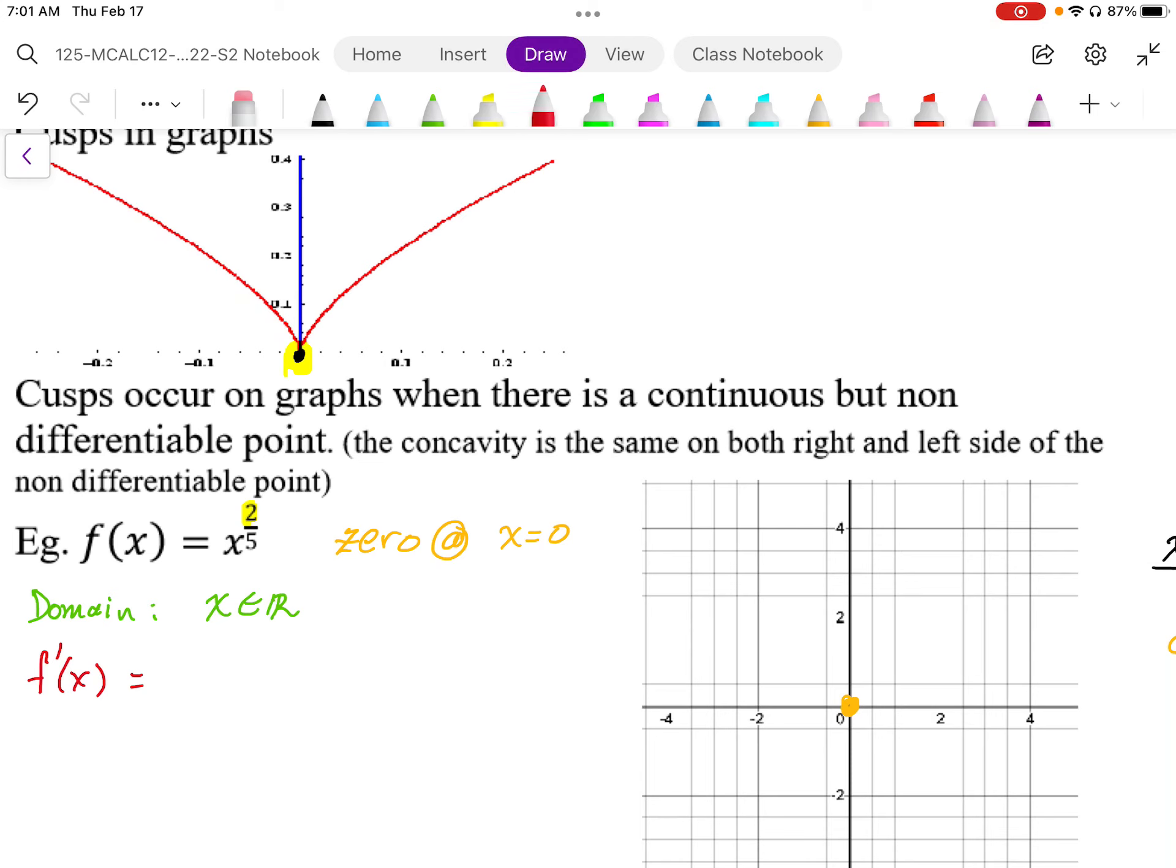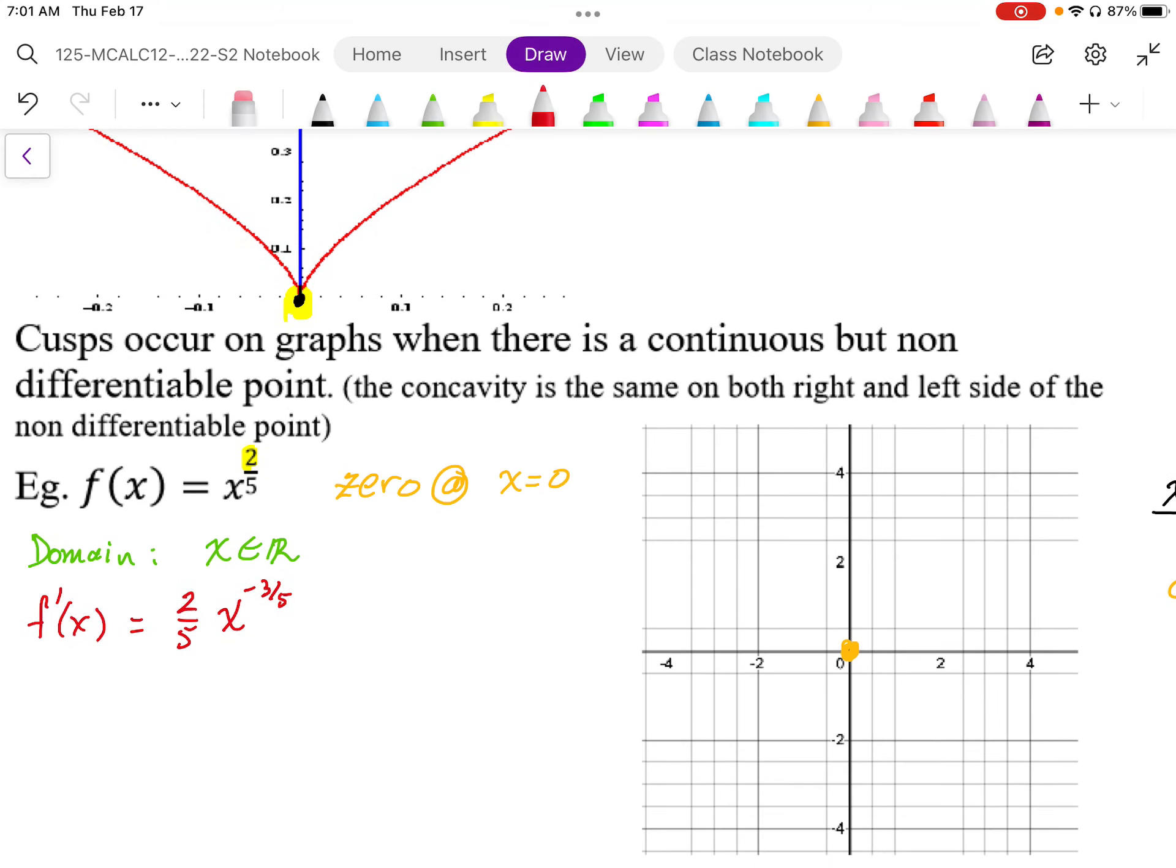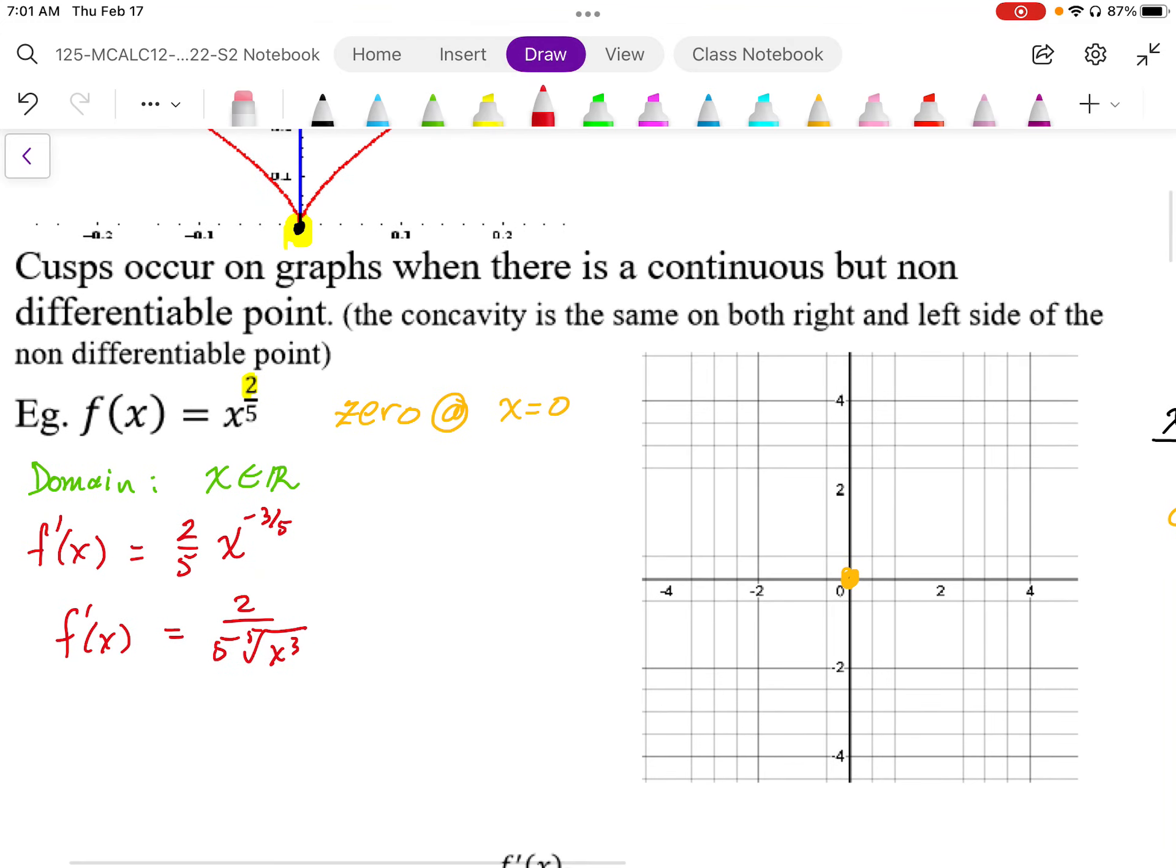Looking at the derivative, differentiating this expression using the power rule, we're going to get 5 over 2, and then subtracting 1, we get power 3 over 5. So simplifying this, we get f prime of x is equal to 2 in the numerator, 5, and this is the 5th root x to the power 3.